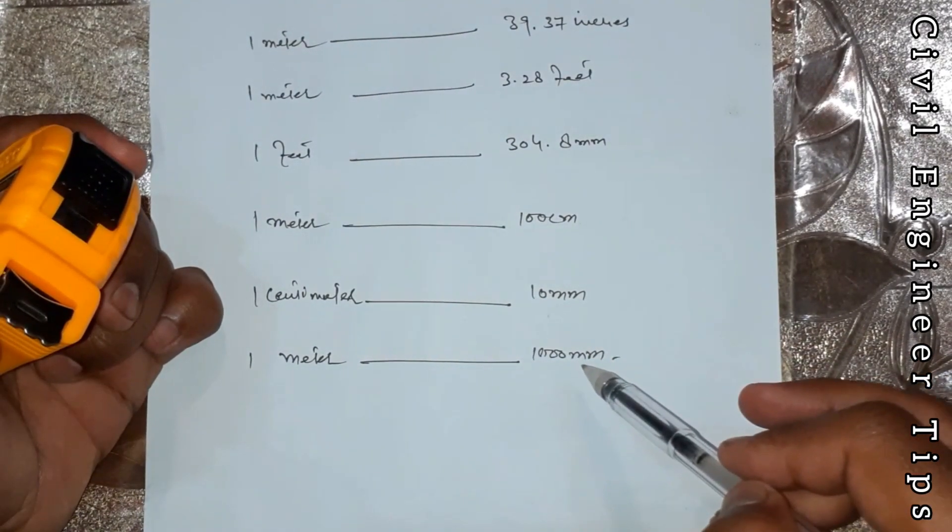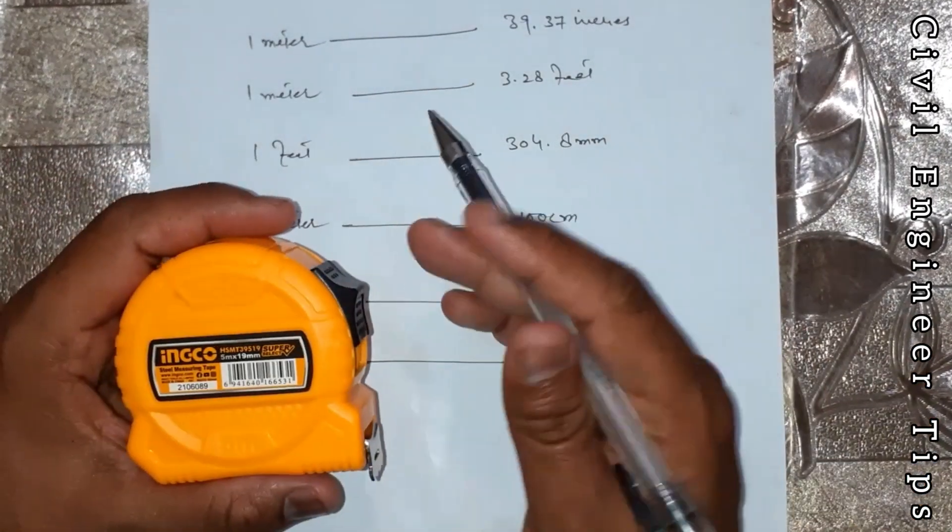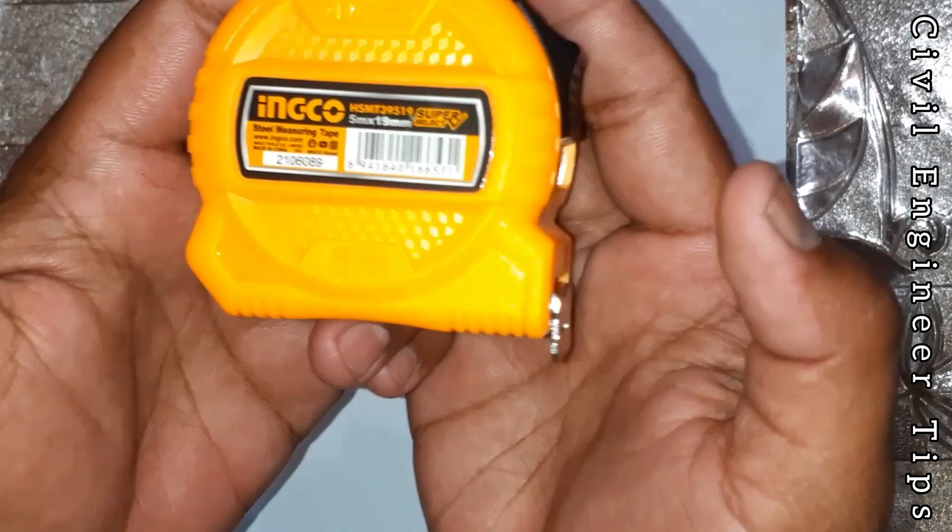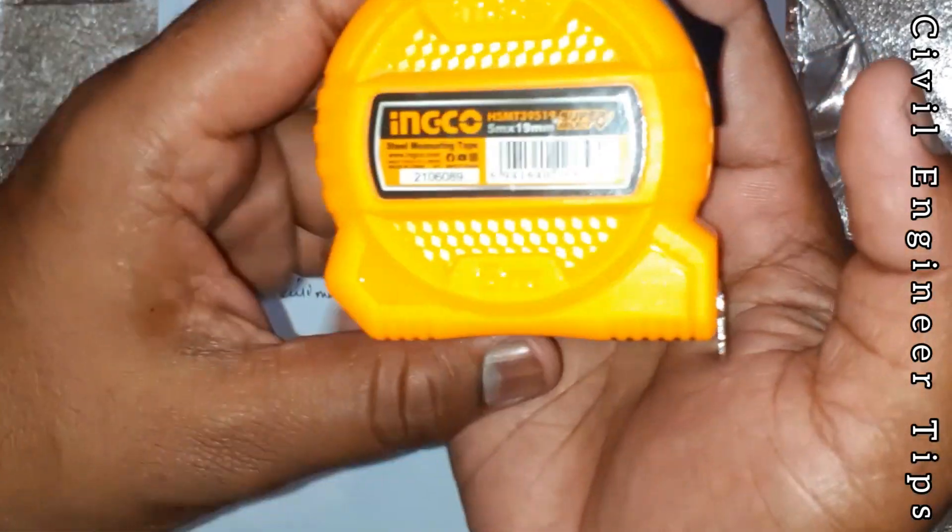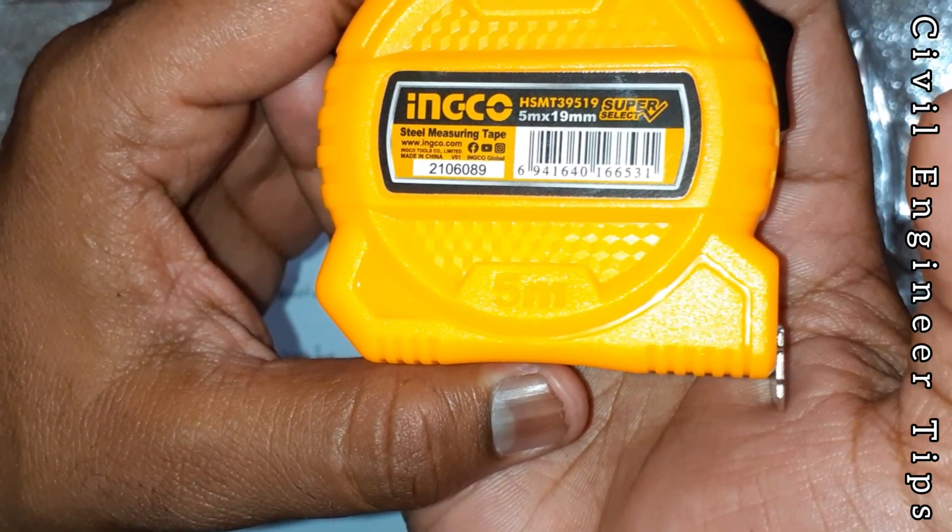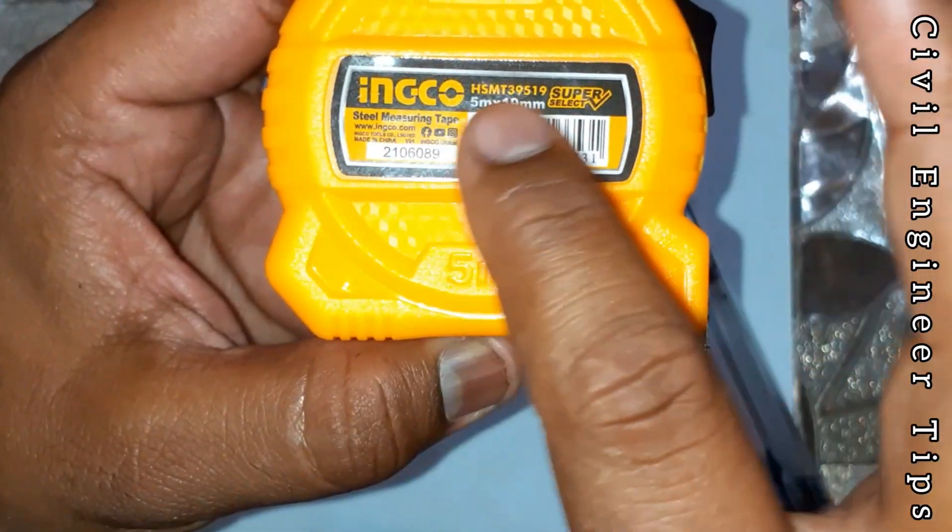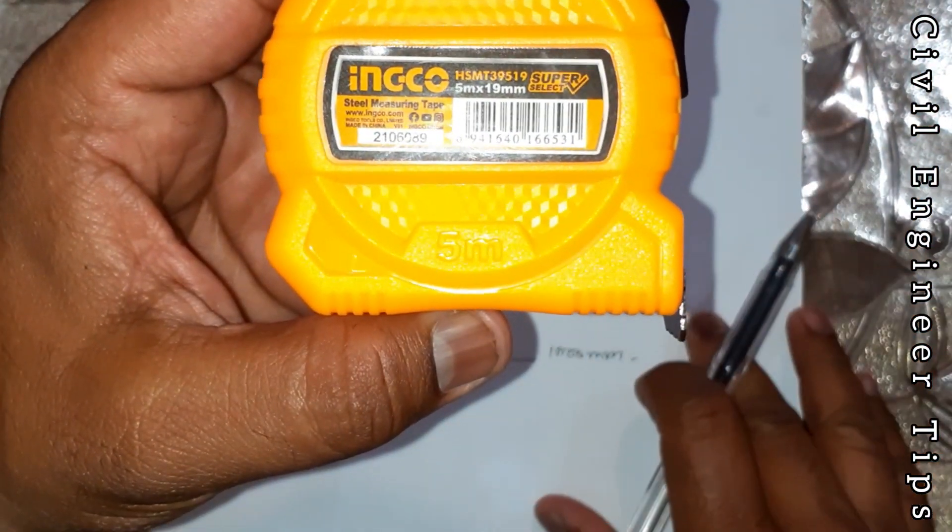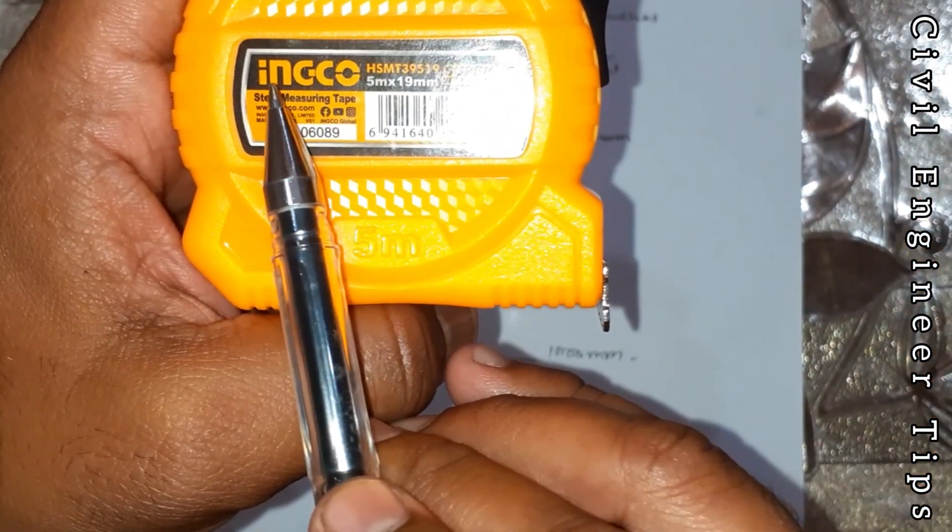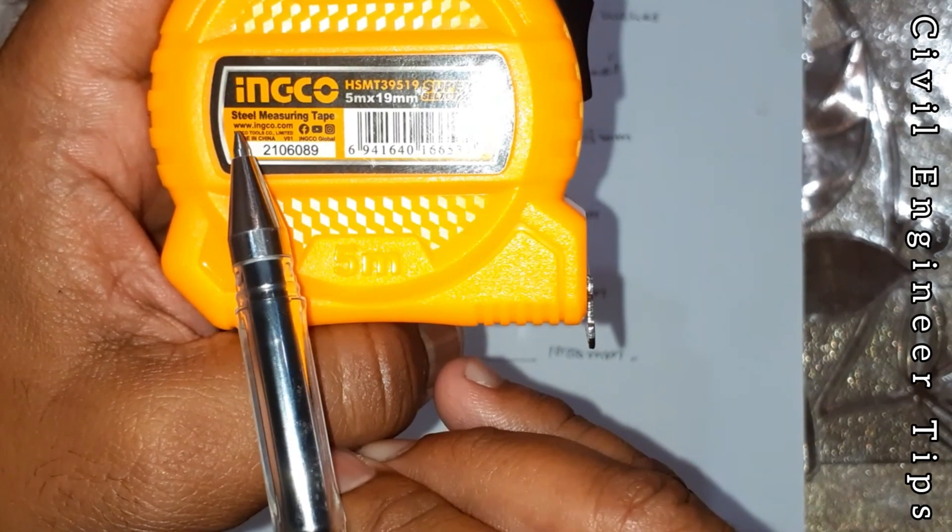Its logo and descriptions are these. Let me show you. This is the company name and under this there are company website and social address, etc. The measuring tape length is 5 meters and its width is 19 millimeters.